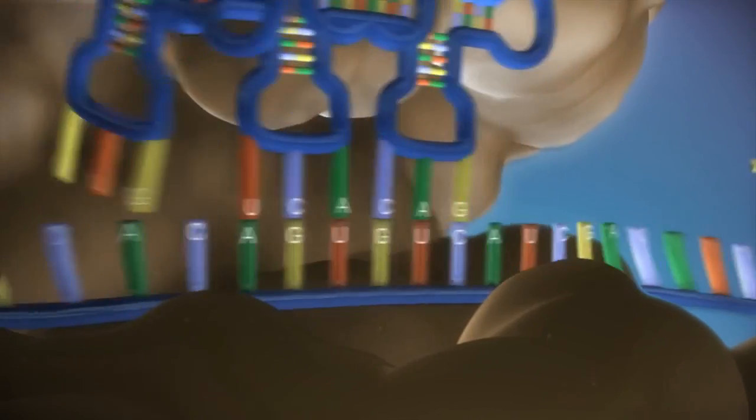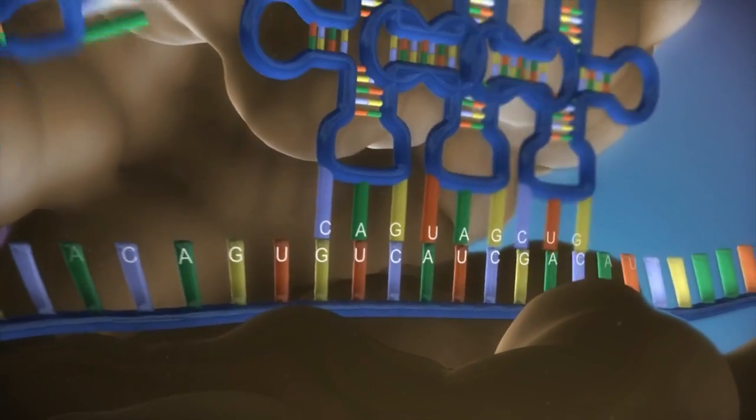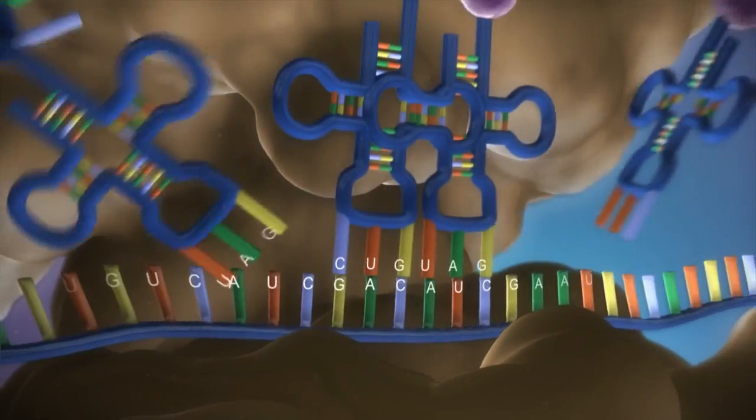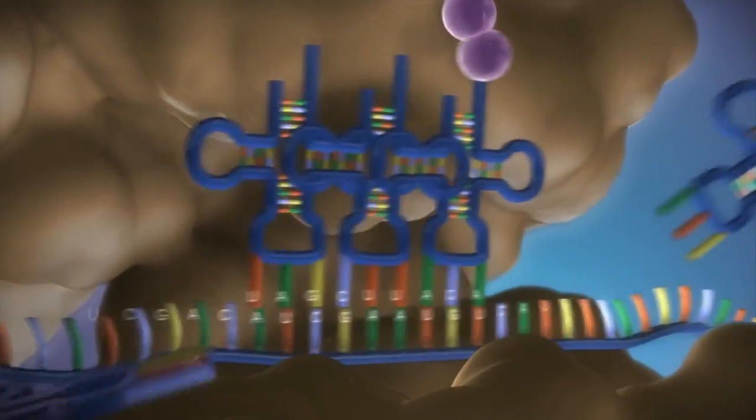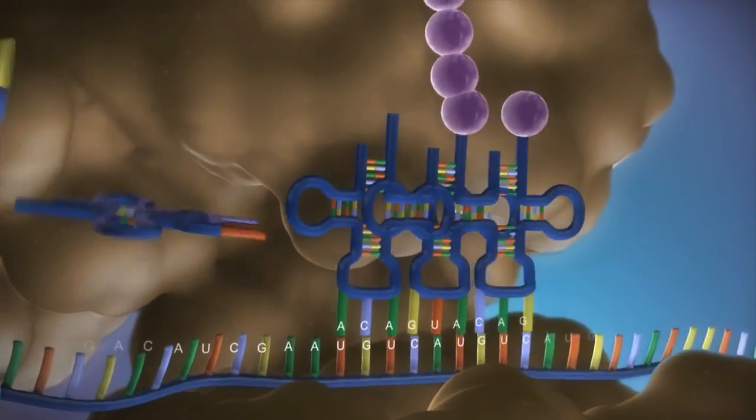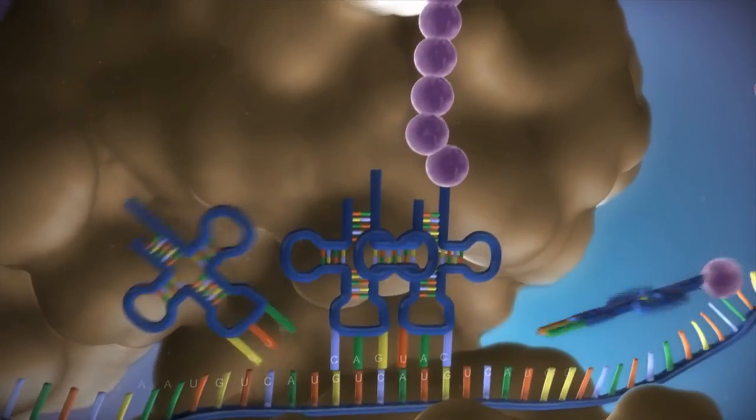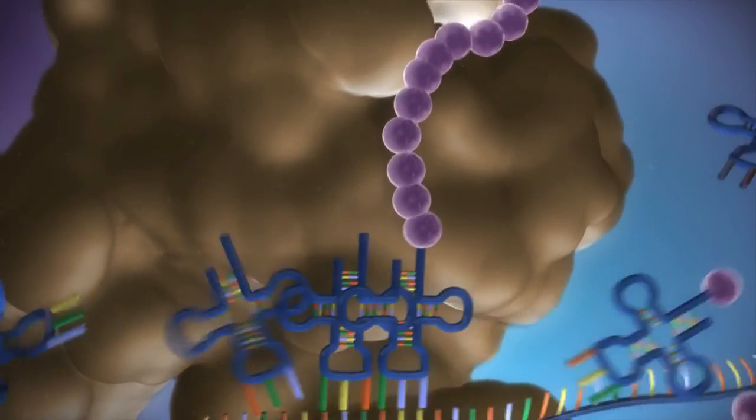The messenger RNA is read three bases at a time. As each triplet is read, a transfer RNA delivers the corresponding amino acid. This is added to a growing chain of amino acids.